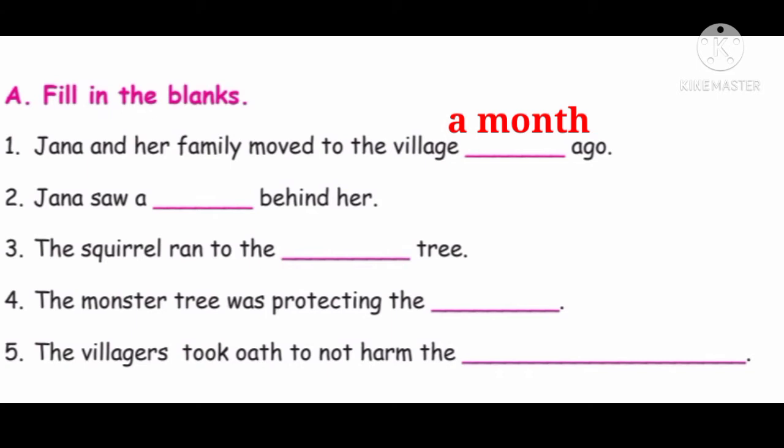Second question: Janna saw a dash behind her. Janna வந்தாவளுக்கு பின்னாடி என்ன பாத்தா? Branch — அந்த மரத்தோட கிலைய பாத்தா. Janna saw a branch behind her.